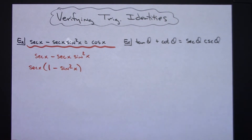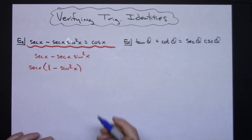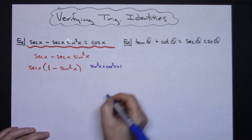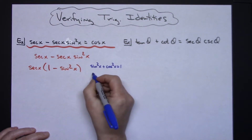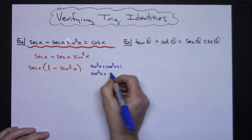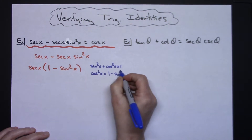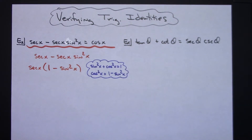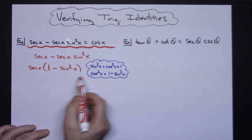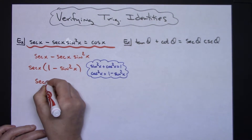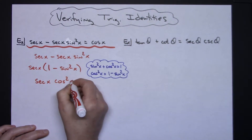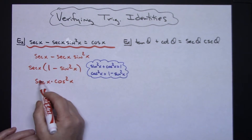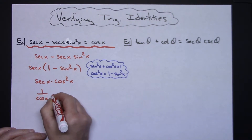Now this — 1 minus sine squared x — hopefully you'll recognize that this equals cosine squared x. That comes from the Pythagorean identity: sine squared x plus cosine squared x equals 1. If I solve for cosine squared x, I get cosine squared x equals 1 minus sine squared x. So I can make that substitution, giving me secant x times cosine squared x. Then I can write secant x as its reciprocal identity: 1 over cosine x, times cosine squared x.